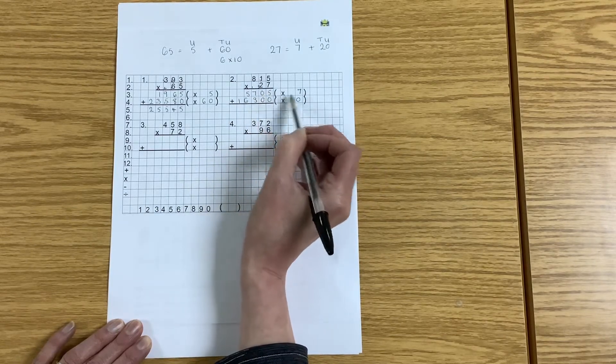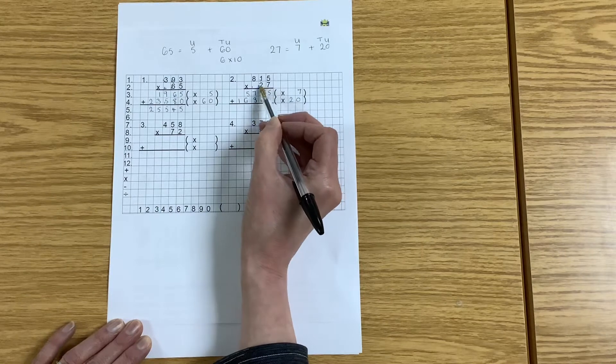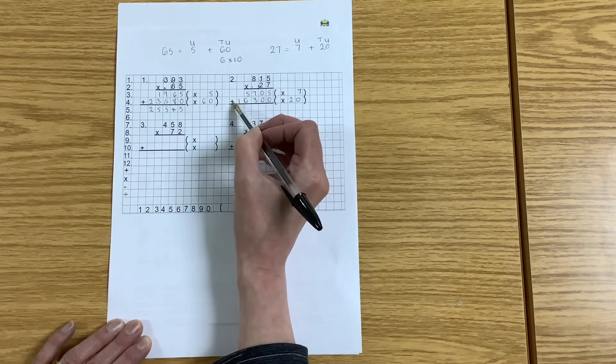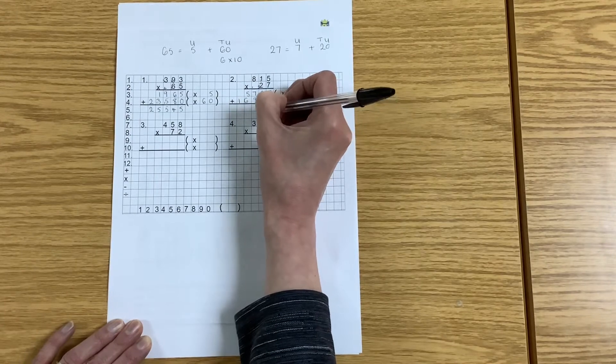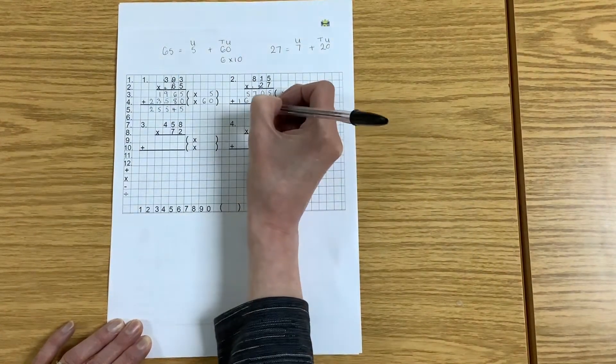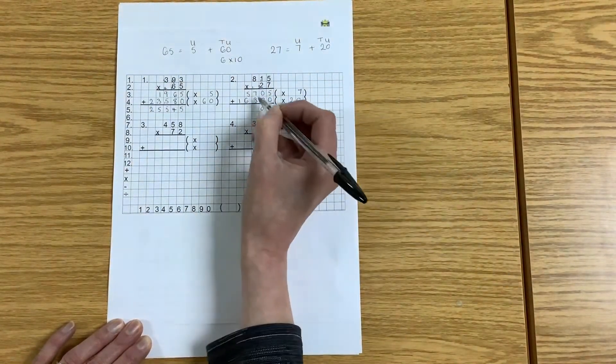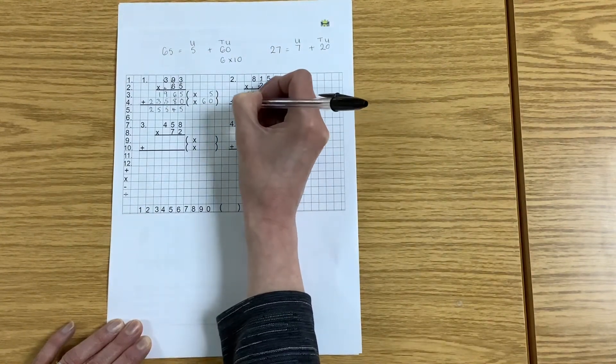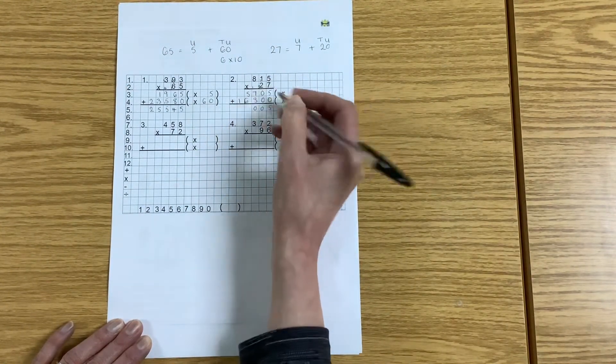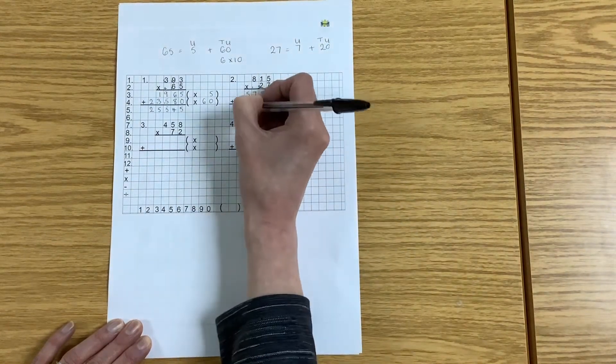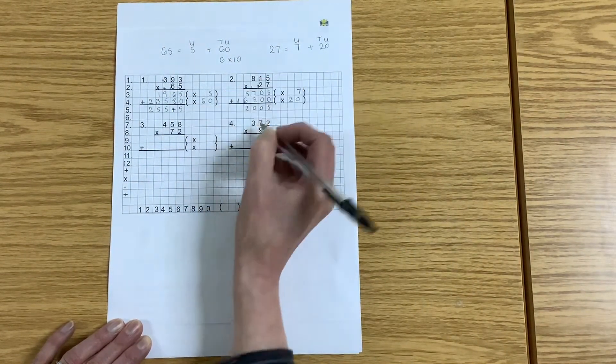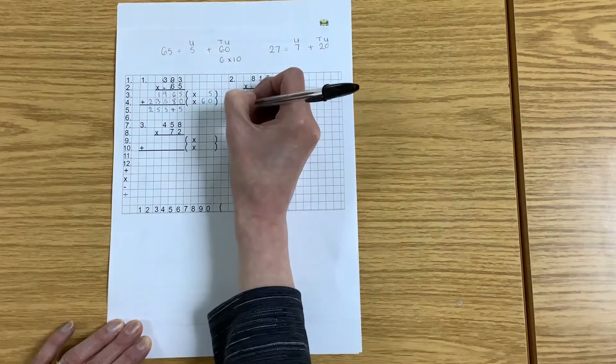So I've got my two lines. I've multiplied by 7, I've multiplied by 20. Now I need to add those together again. 5 add 0 is 5. 0 add 0 is 0. 7 add 3 is 10. 5 plus 6 plus 1—well, 5 add 6 is 11 and one more makes 12. 1 plus 1 is 2.